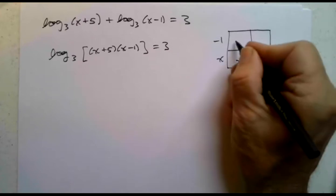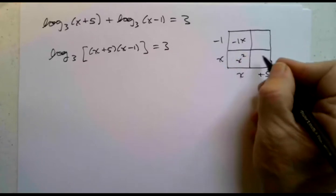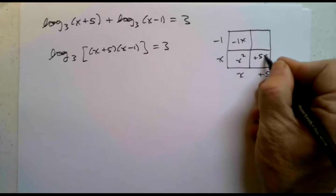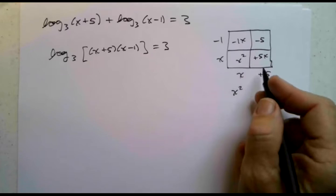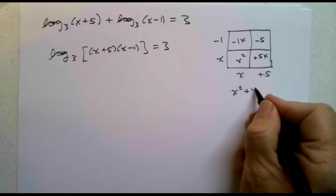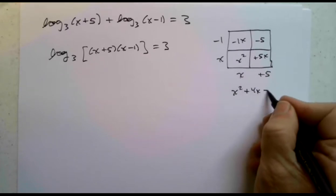x plus 5 times x minus 1. x times x is x squared, negative 1 times x is negative 1x, positive 5 times x is positive 5x, negative 1 times 5 is negative 5. We get x squared, 5x minus 1x would be plus 4x minus 5.